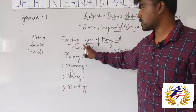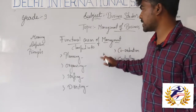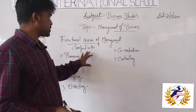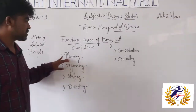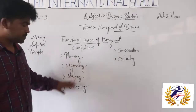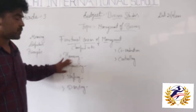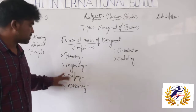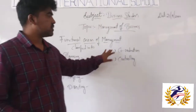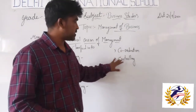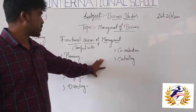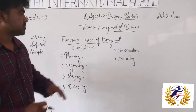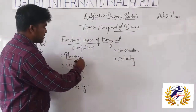The functional areas of management are classified as follows: the first one is planning, organizing, staffing, directing, coordination, and controlling. These are the important functional areas of management. We will discuss them one by one.